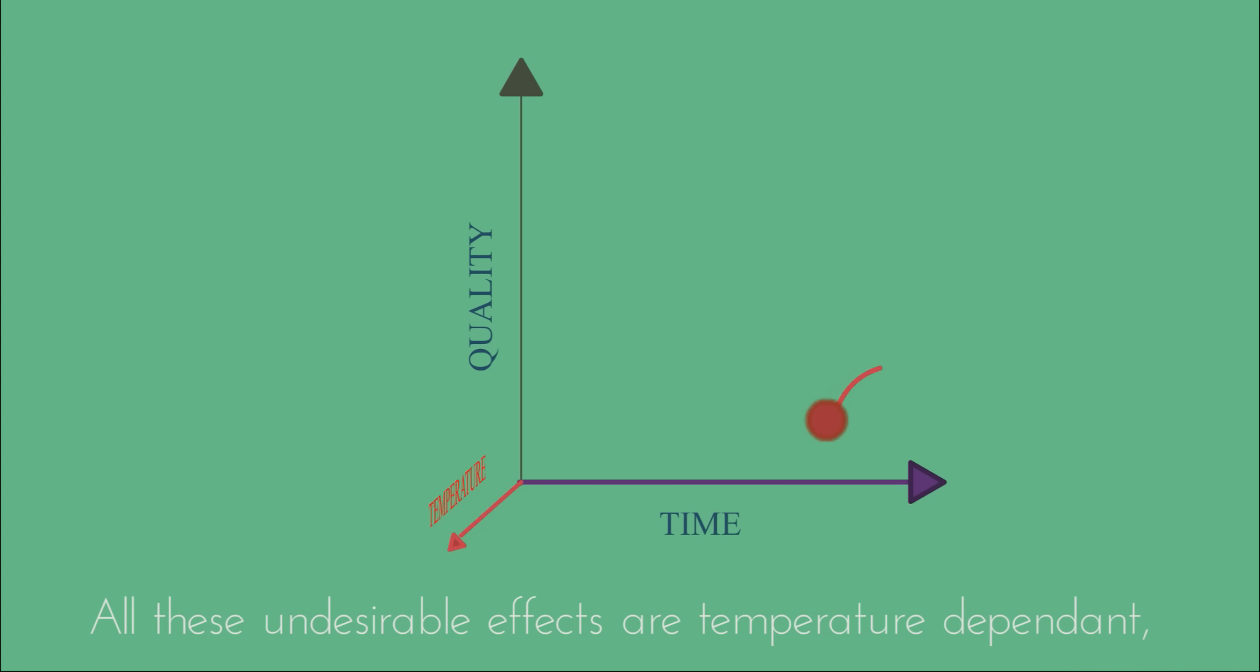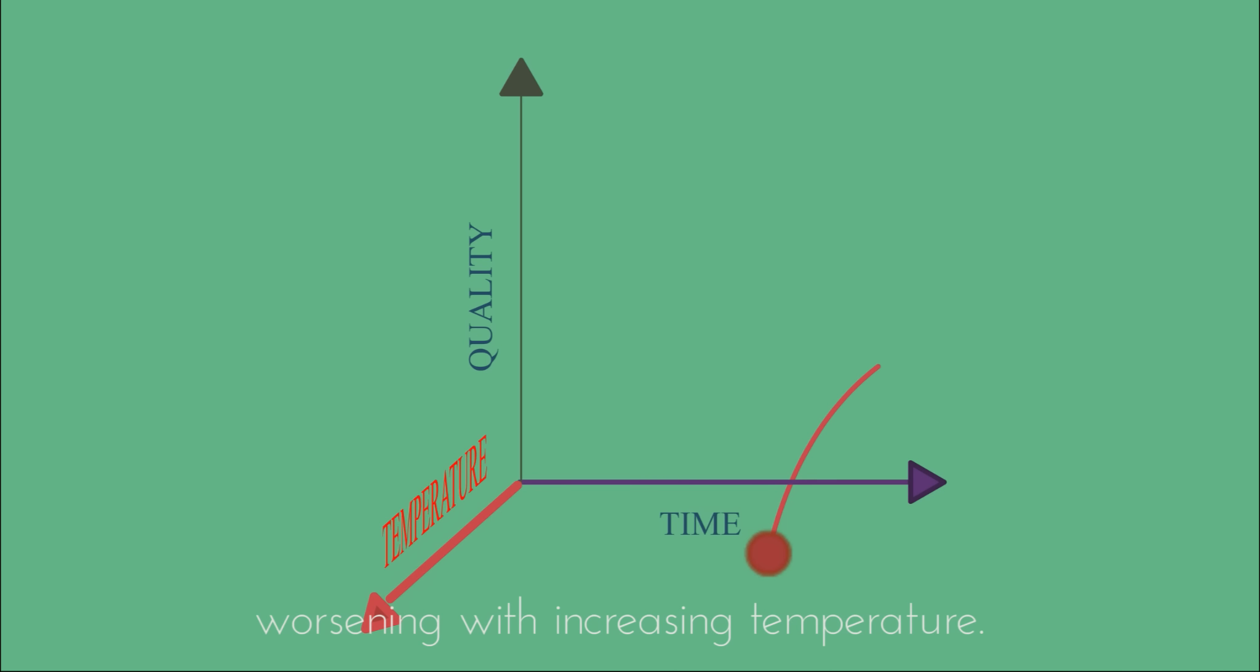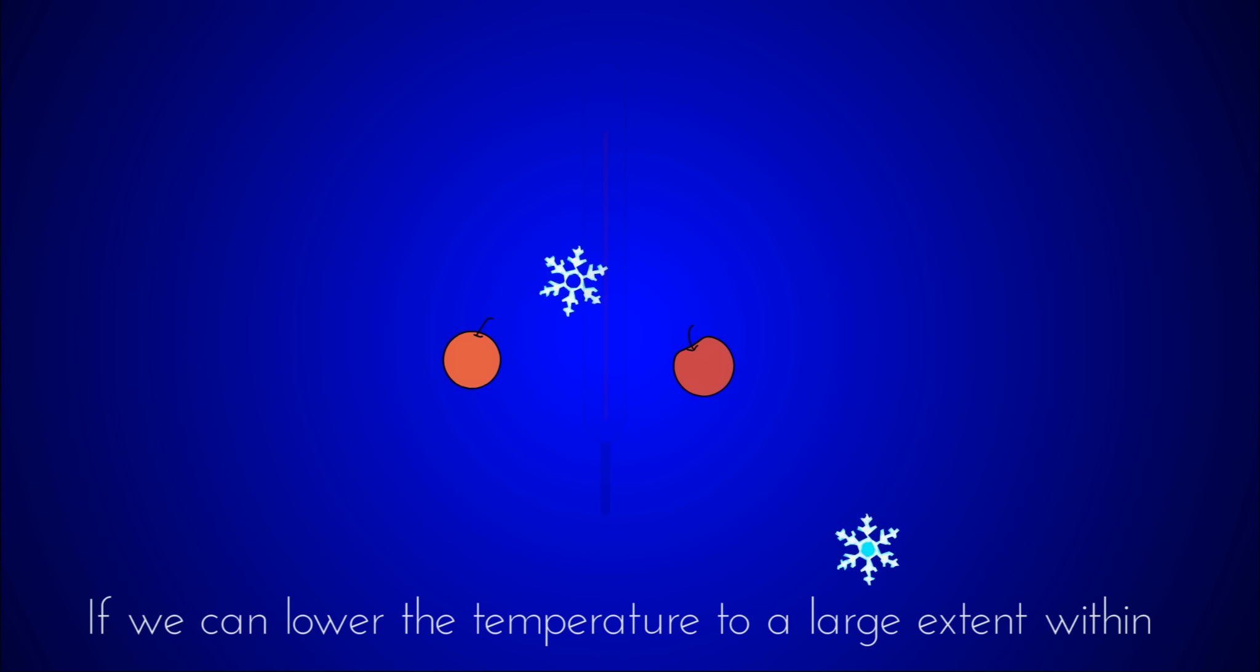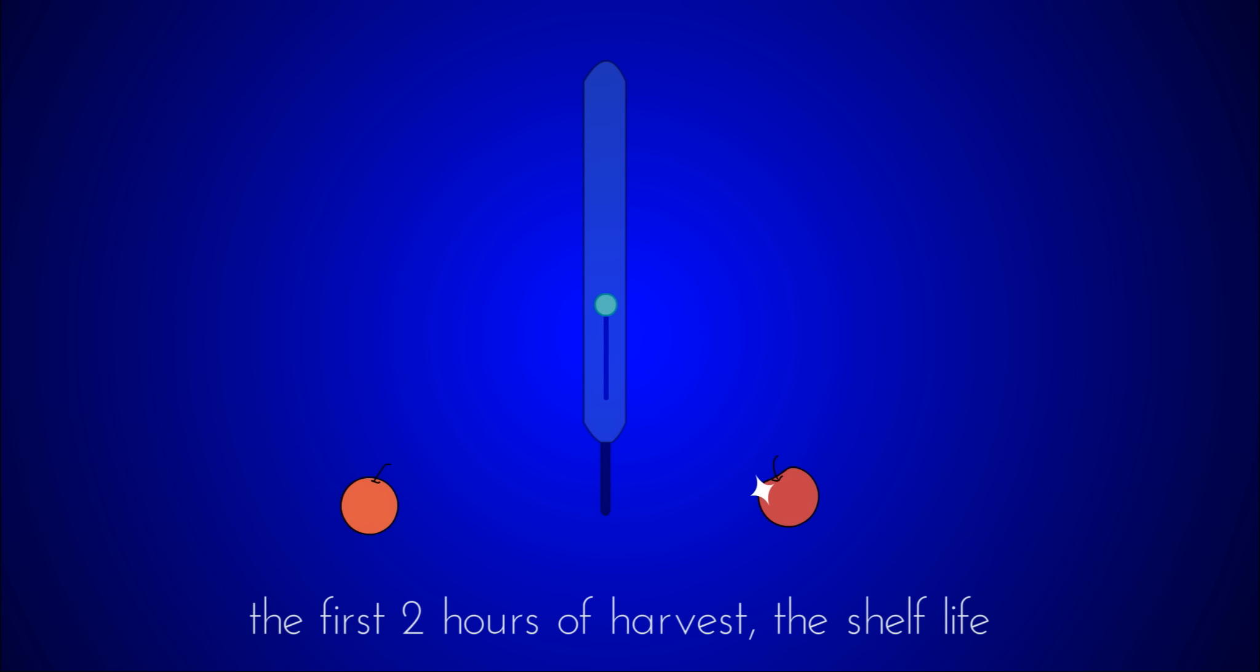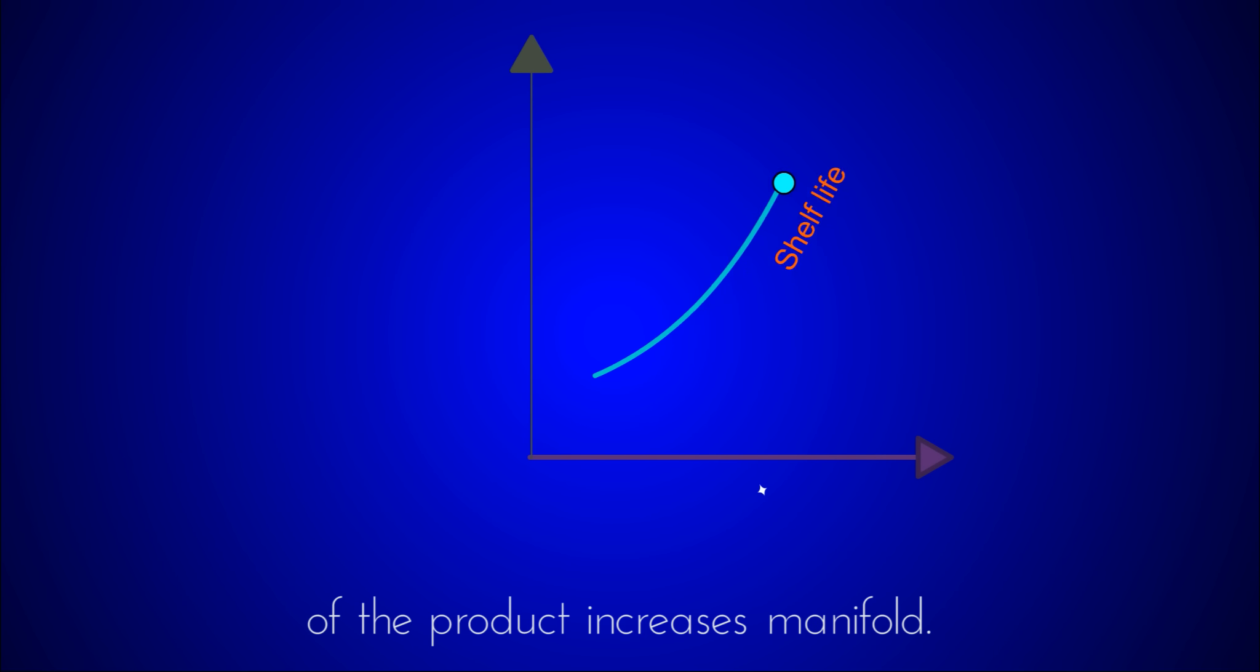All these undesirable effects are temperature dependent, worsening with increasing temperature. If we can lower the temperature to a great extent within the first two hours of harvest, the shelf life of the product increases manifold.